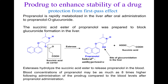Some prodrugs enhance the stability of the drug through protection from first-pass metabolism. Propranolol is rapidly metabolized in the liver after oral administration, forming propranolol O-glucuronide. There is a site of glucuronidation in the liver where it undergoes metabolism and gets excreted much quicker. A succinic acid ester of propranolol was prepared to block this glucuronide formation in the liver — the succinic acid carrier protects it through first-pass metabolism, and once it reaches its site of action, propranolol gets released, giving drug levels eight times higher than propranolol administration on its own.